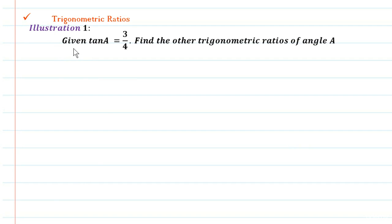The question is: given tan A is equal to 3 upon 4, find the other trigonometric ratios of angle A. So the question is like this - we have been given one T ratio, tan A equals 3 by 4, and with the help of this T ratio we have to find the remaining T ratios, that is remaining 5 T ratios of the angle A.